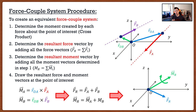We took two forces that did not act at point O and converted them into an equivalent force couple system acting at point O. The trick here is: wherever the point of interest is, it changes the resultant moments, because we're taking moments about specific points. So if they wanted the force couple system at a different point, say point P, the cross products are going to change. Keep that in mind.